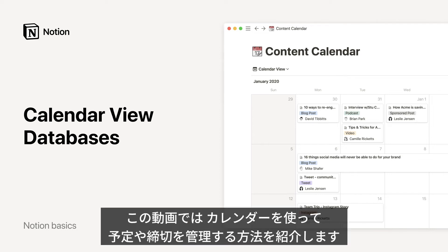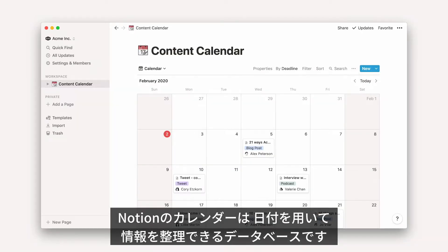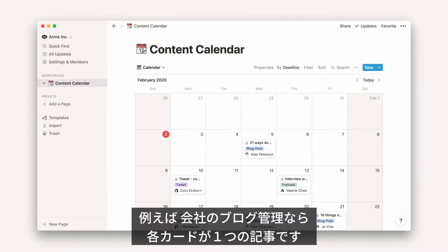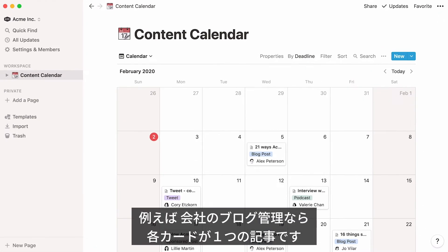Hello! This video will teach you the many ways you can use calendars in Notion to keep track of events, deadlines, schedules, and more. In Notion, calendars are databases that allow you to organize information by date. As an example, here's a content calendar for a company's blog.